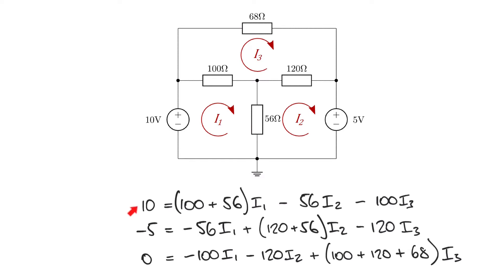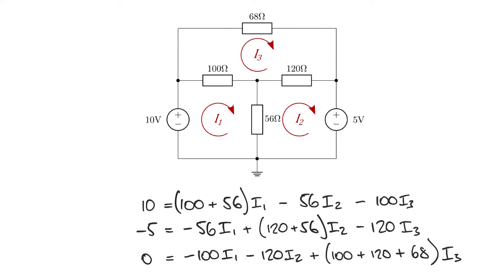Looking at our first pane, we have 10 volts, and that's equal to I1 flowing through the two components in that pane — the 100 ohms and the 56 ohms — subtracting the anti-clockwise element, minus 56 times I2 flowing through that 56 ohm resistor, and also minus 100 I3, because I3 flows in a relatively anti-clockwise direction through the 100 ohm resistor in that first pane. If this doesn't make sense, it's worth watching our introductory video where we discuss how to set these equations up.